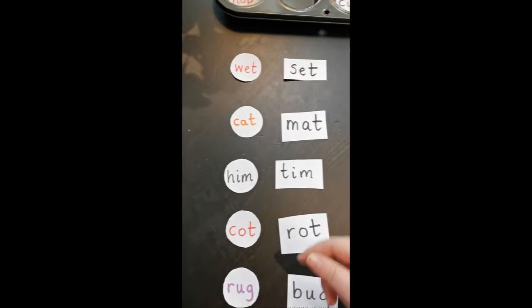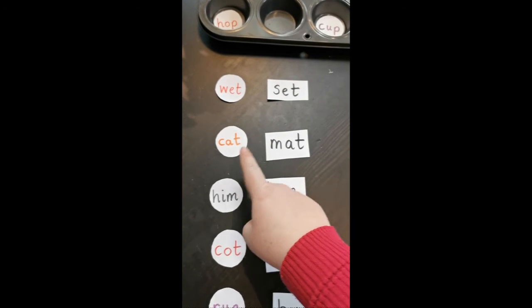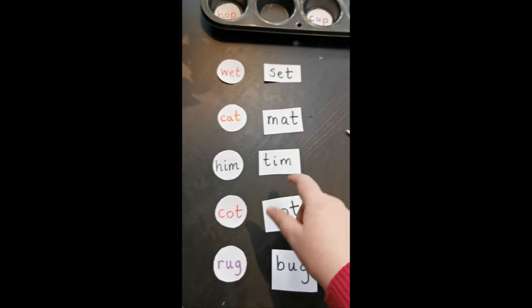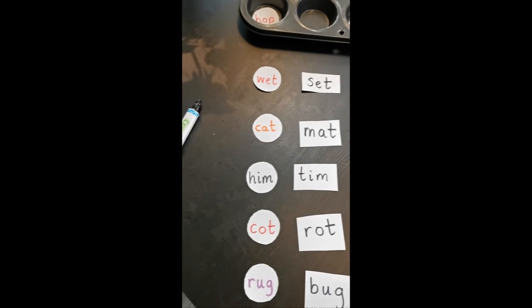So you have your list - then double check it. Wet and set? Yes. Cat and Matt? Yes. Him and Tim? Yes. Cut and rot? Yes. Rug and bug? Yes. Then you get them to close their eyes.